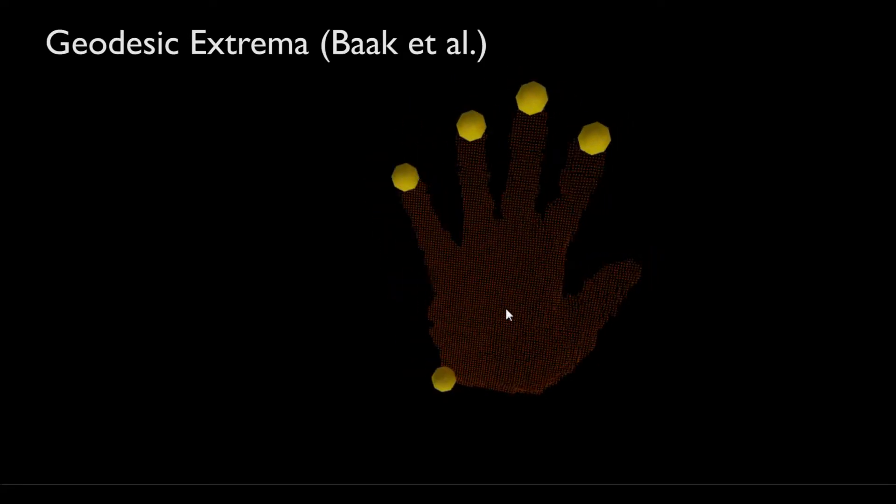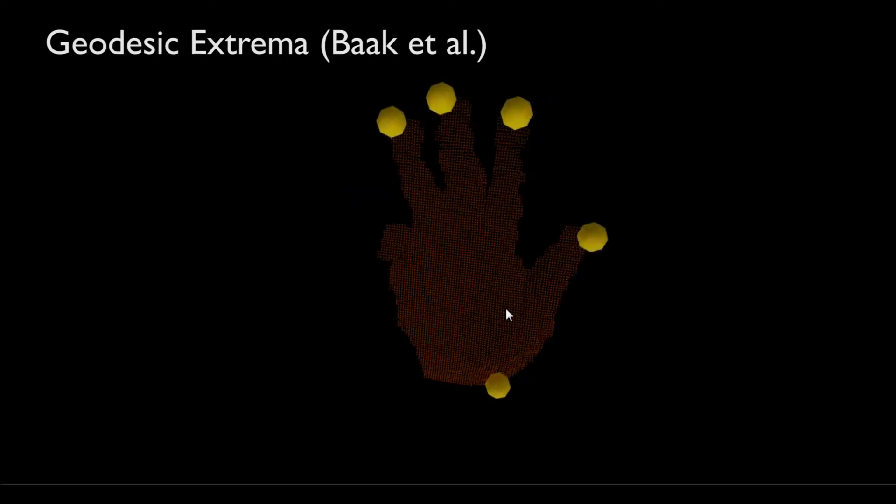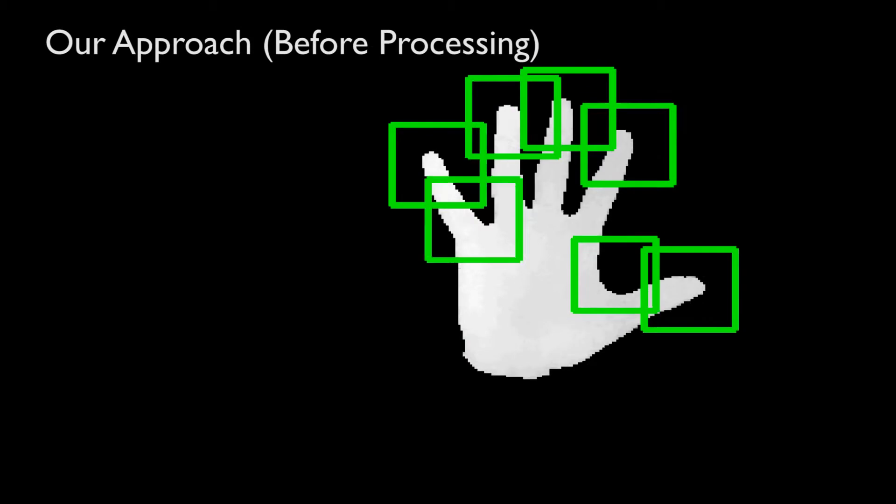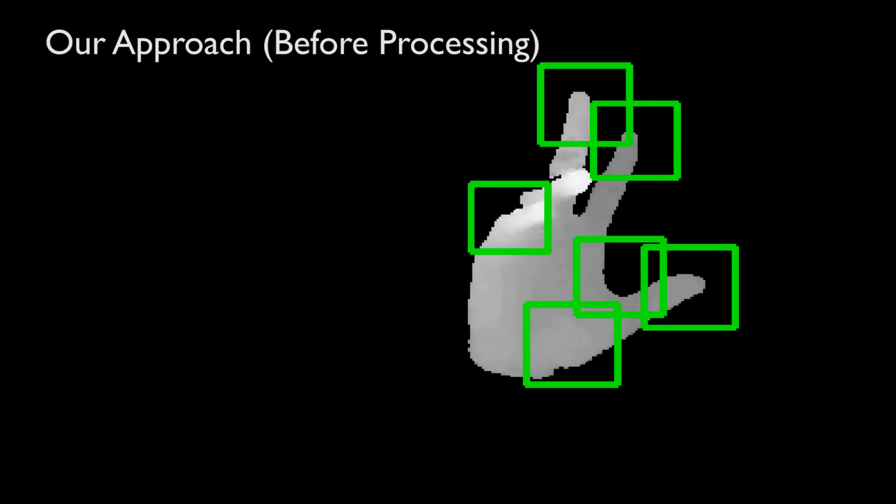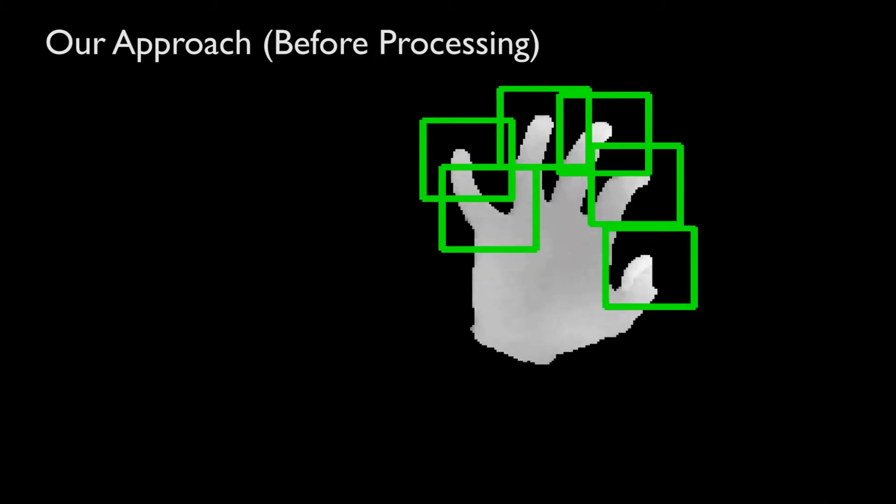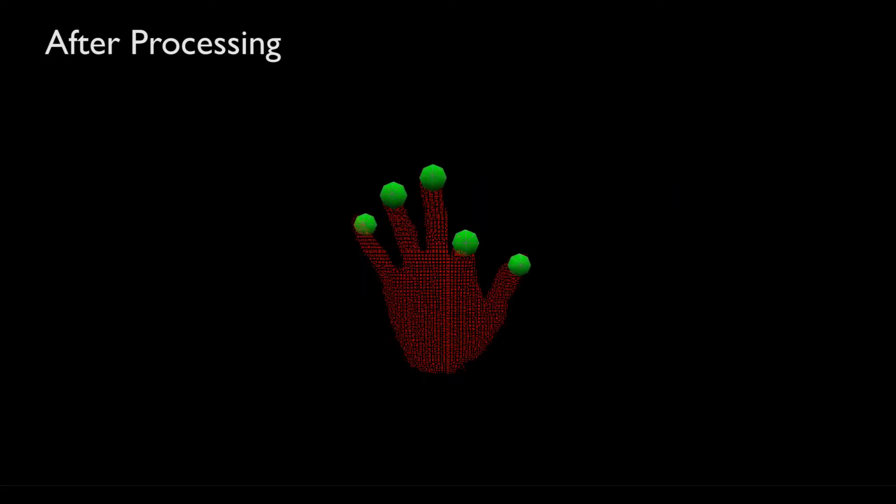Geodesic extrema features, previously used in full body pose estimation, are noisy and unreliable for the hand. We train a linear support vector machine classifier with histogram of oriented gradient descriptors as features to classify fingertip locations on depth images. The detected regions are then processed to eliminate false positives.